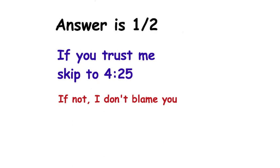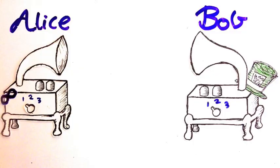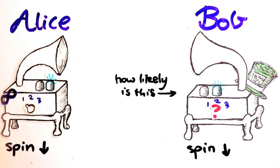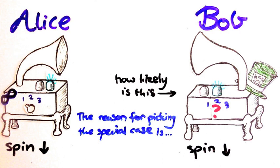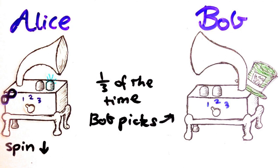Let's say Alice measured around axis 1 and happened to get spin down. Let's see how likely Bob is to measure spin down as well. The reason I can just pick a particular case like this is because all the other cases will work out in the same way to the same result. One third of the time, Bob will choose axis 1 as well.